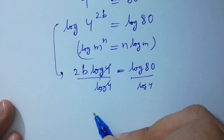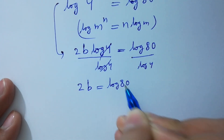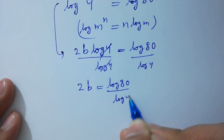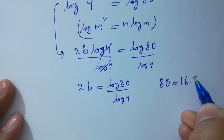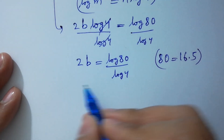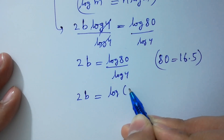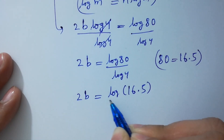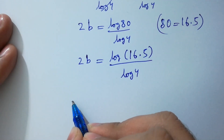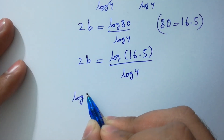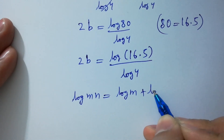Log 4 and log 4 will be cancelled, so 2B equals log 80 over log 4. Since 80 equals 16 times 5, 2B equals log of 16 times 5 over log 4. And since log mn equals log m plus log n: